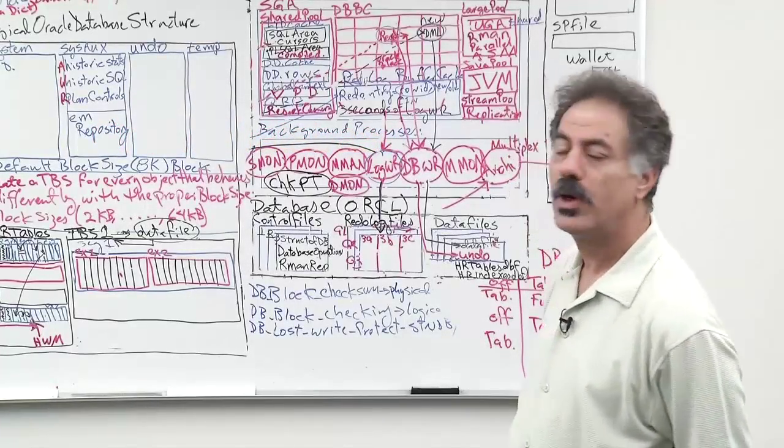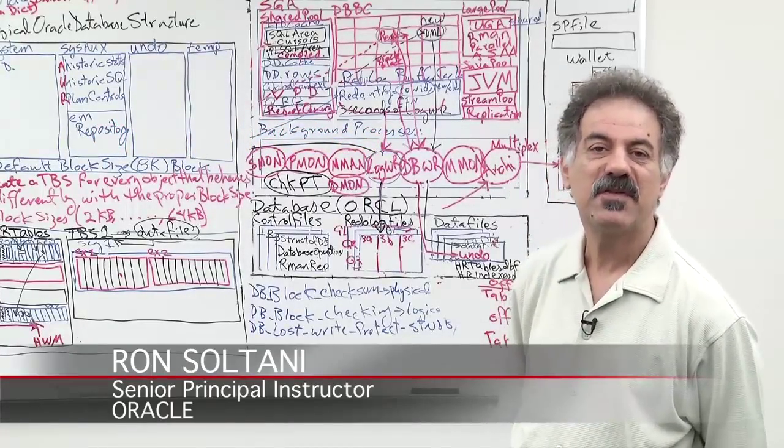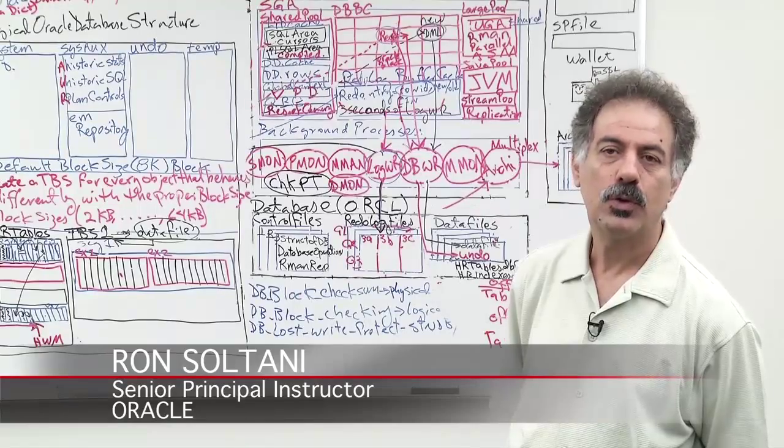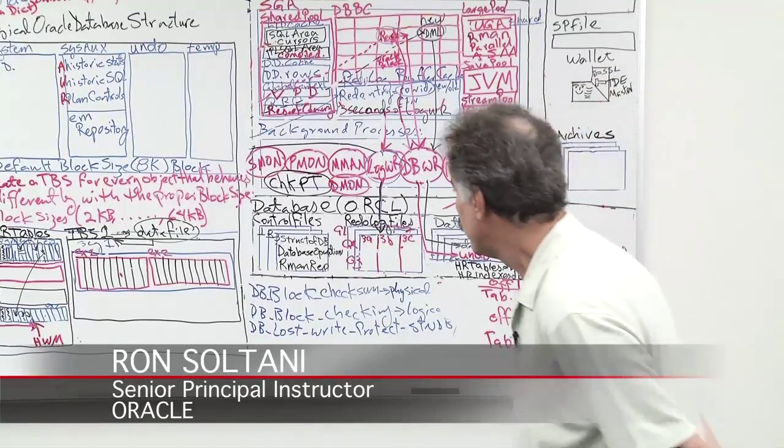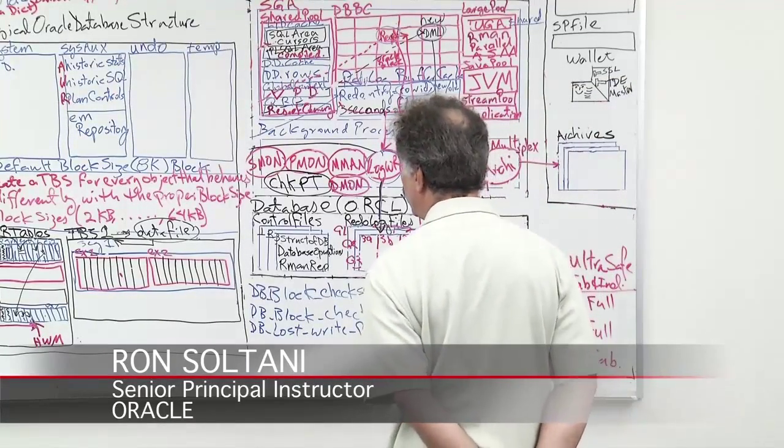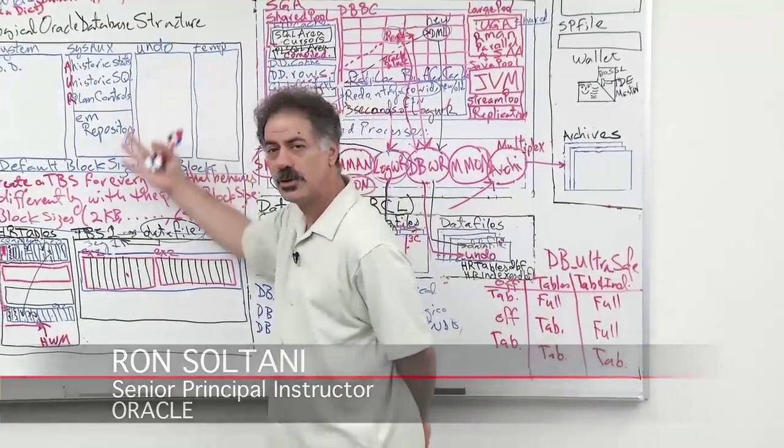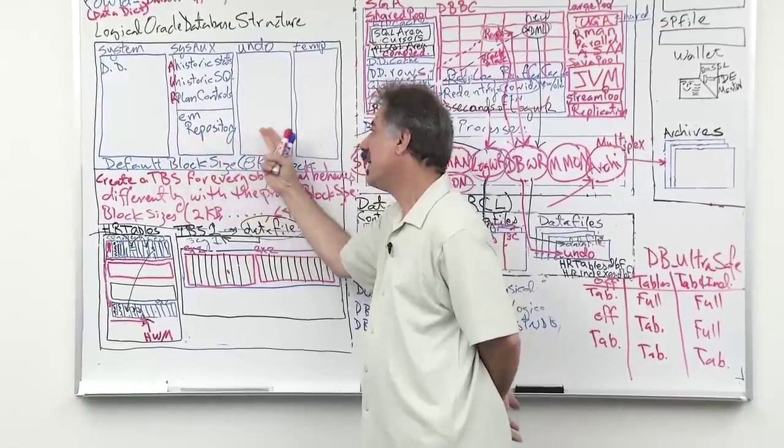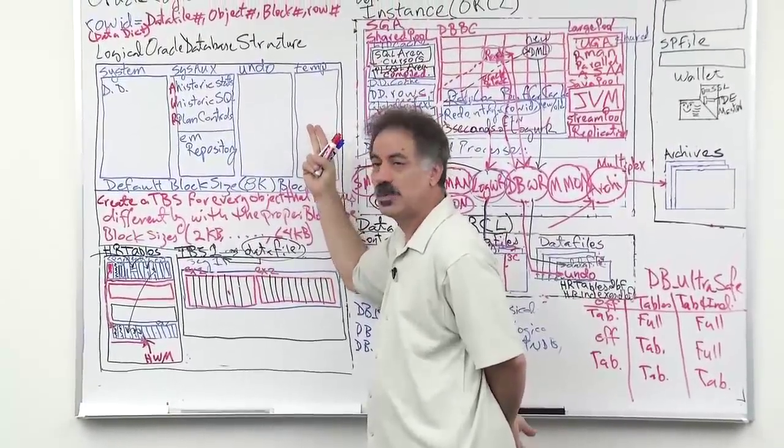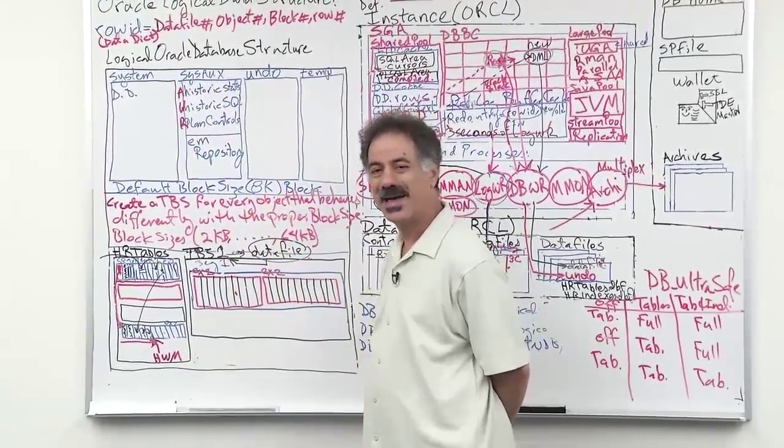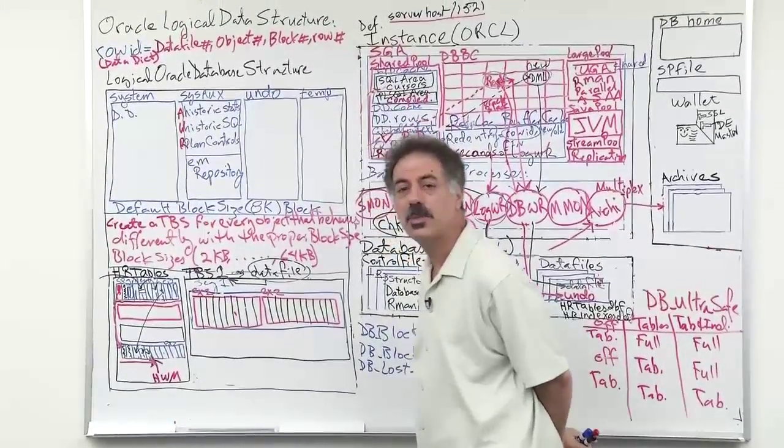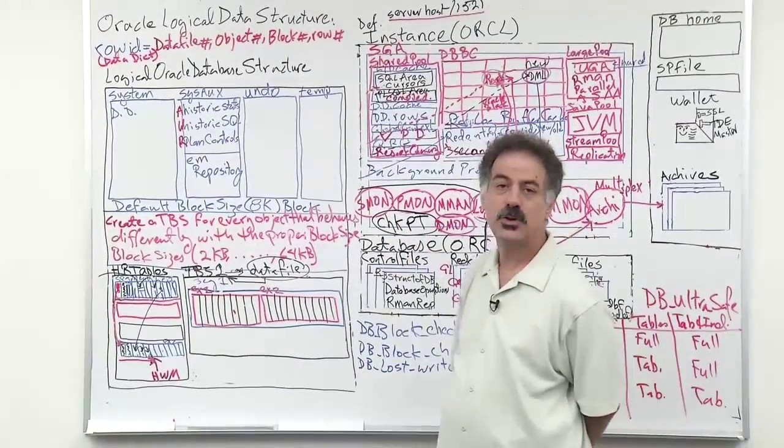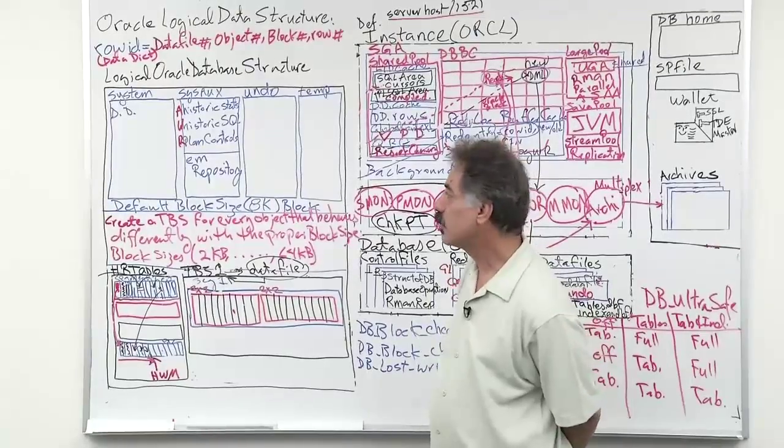In this section we are going to review the fragmentation management for data. In the previous section we discussed the logical structure of the Oracle database - that the database was divided into table spaces. Some table spaces are built automatically for us that use a default block size that is selected during the installation.